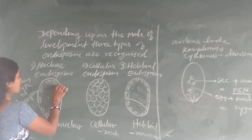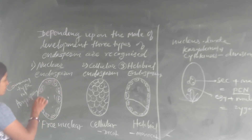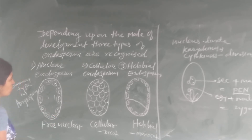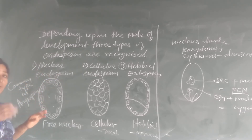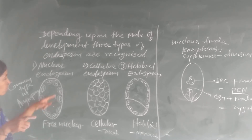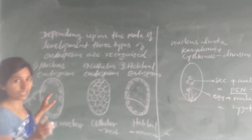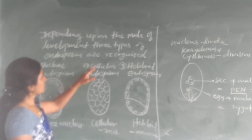This is how it forms a cellular endosperm. First it is nuclear endosperm because only free nuclei are present — three nuclei are there. So it is a nuclear endosperm. But later on, each nucleus is surrounded by the formation of a cell wall, and then it becomes cellular. First that is nuclear form, then it becomes cellular form.